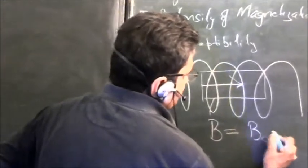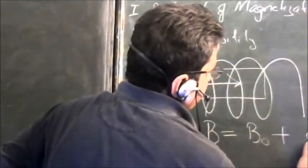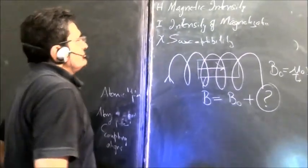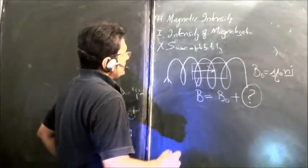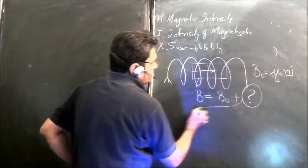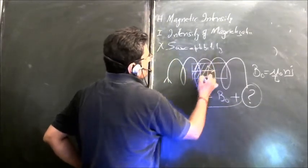It will become B0 plus something. What is this something? It is represented by intensity of magnetization because this material is now magnetized.